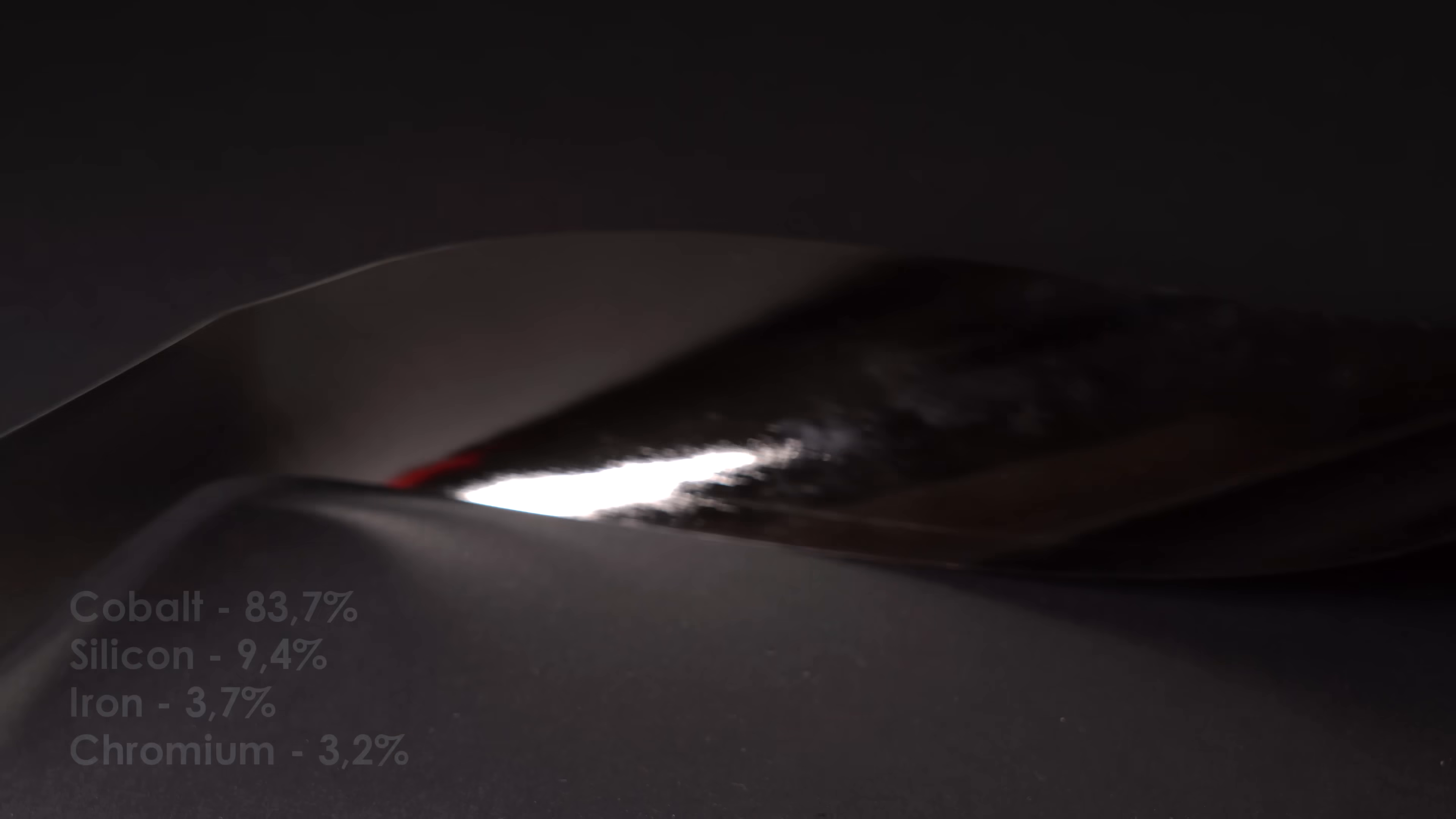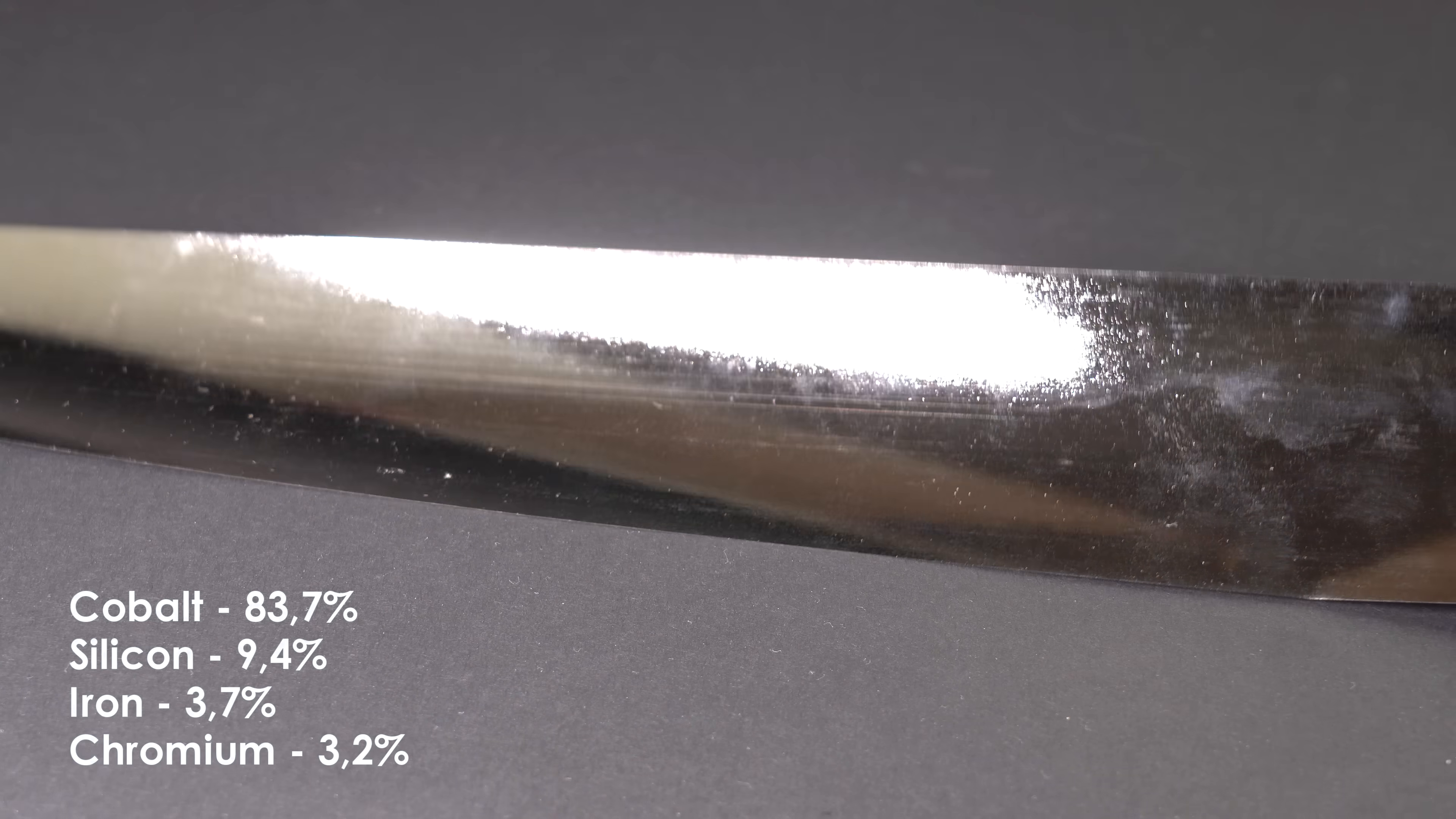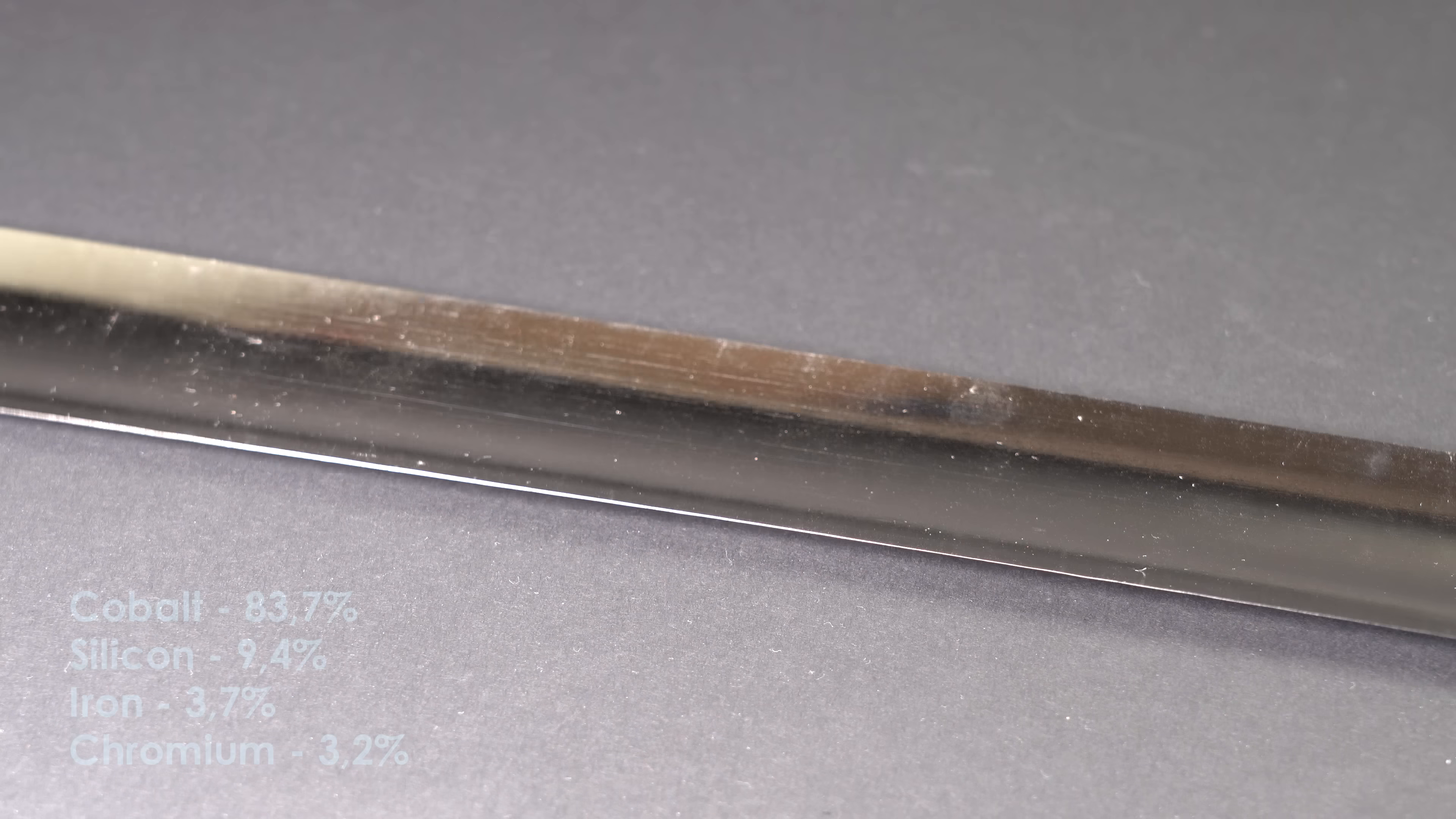This strip is made of alloy of cobalt, silicon, iron and chromium. You can see the ratio of these elements on your screen.